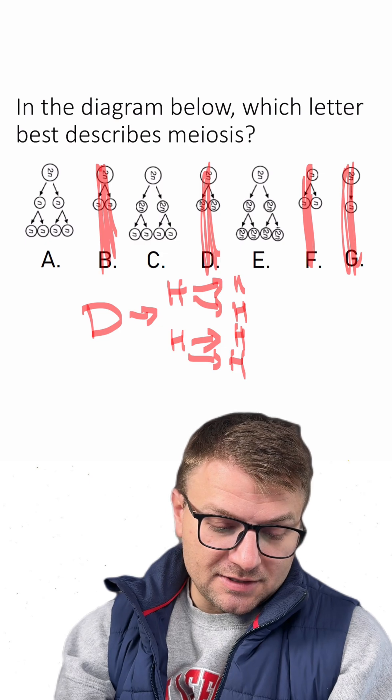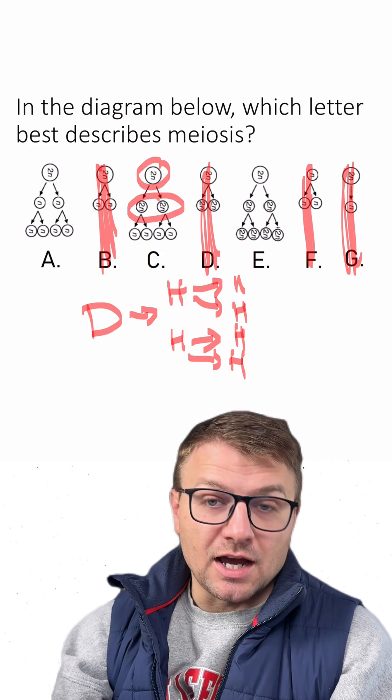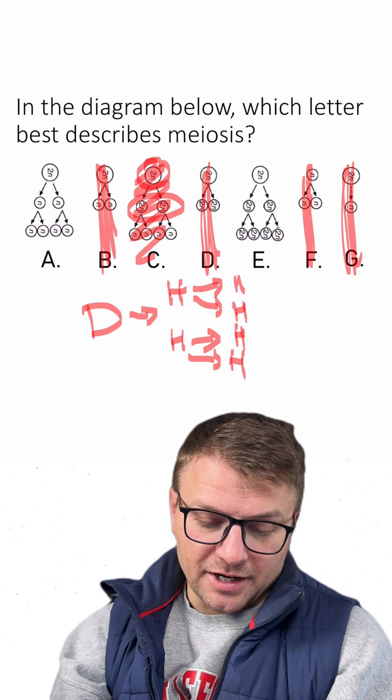So if you look at our answers, we can see C, in the first round of division, they're still diploid. So C is not our answer.